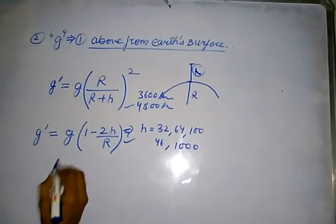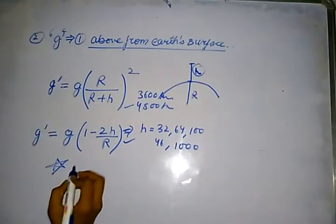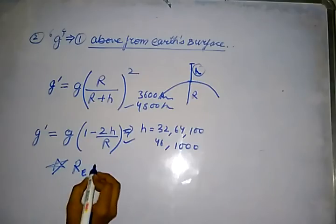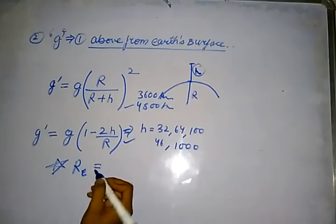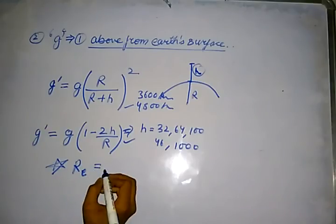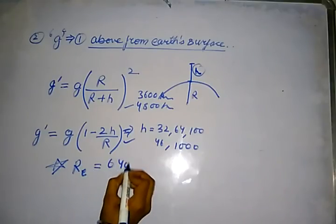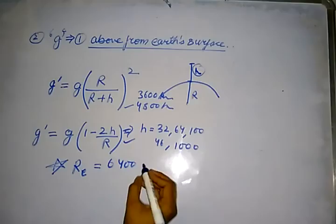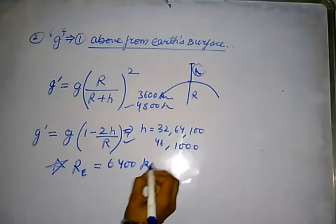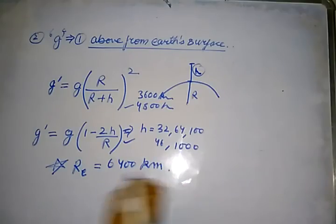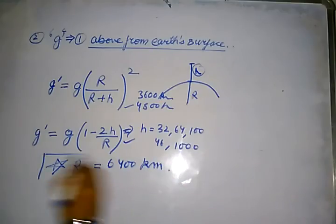You have to remember: the radius of the Earth is equal to 6400 km.